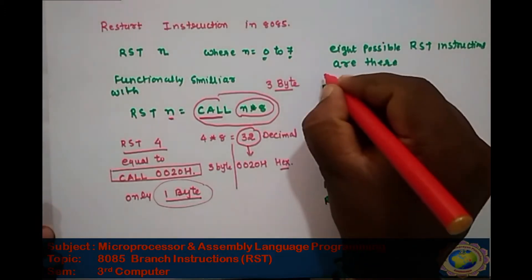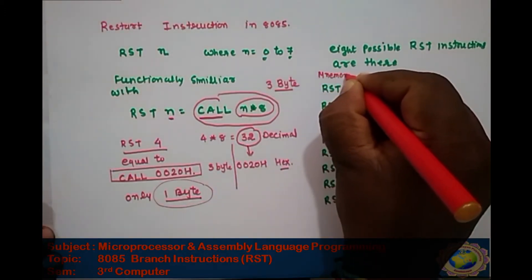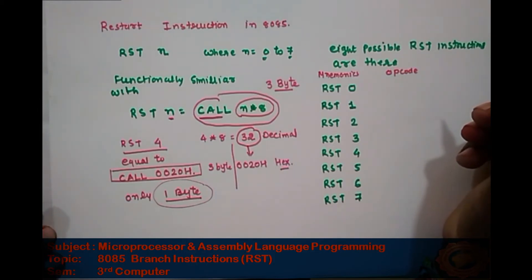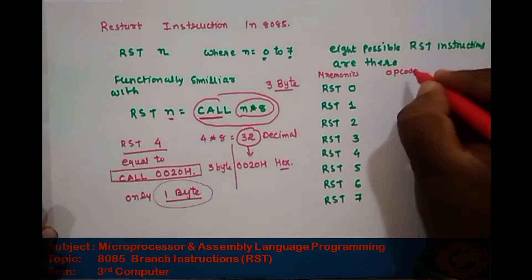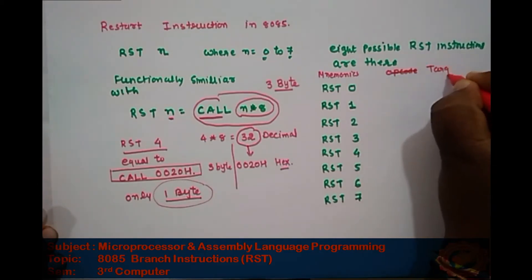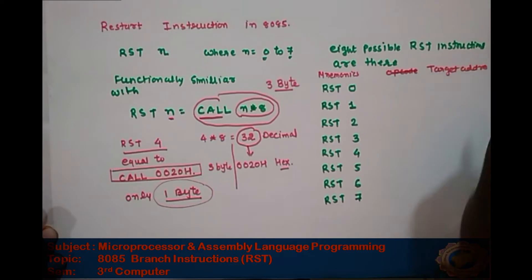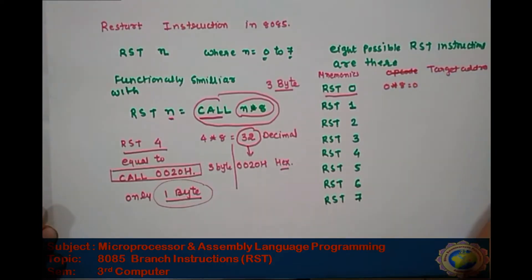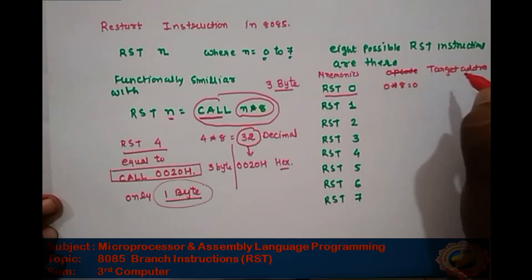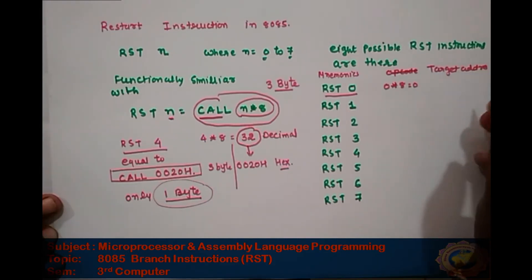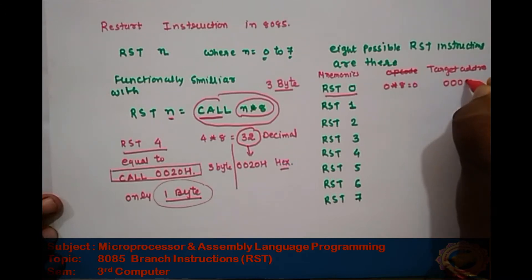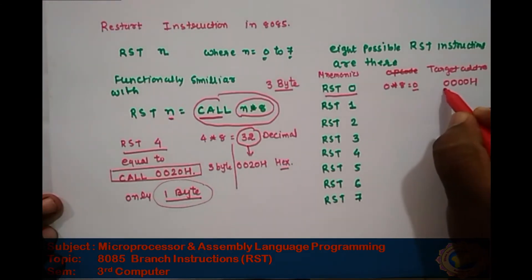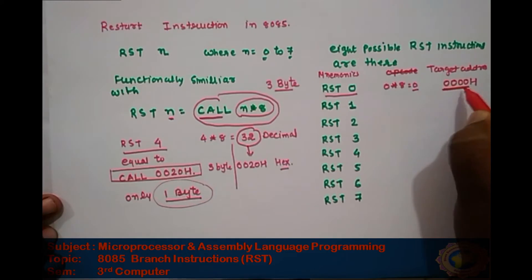We will now see the mnemonics from RST 0 to RST 7 and their target addresses. When it is RST 0, 0 multiplied by 8 is 0, so its target address is 0000H. When it is RST 1, 1 multiplied by 8 is 8, and the hex of 8 is 0008H. For RST 2, 2 multiplied by 8 is 16, and the hex of 16 is 0010H.